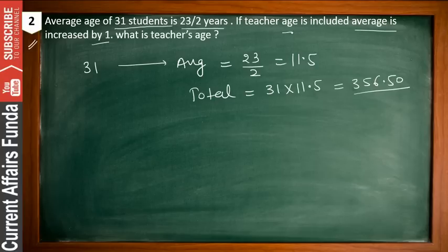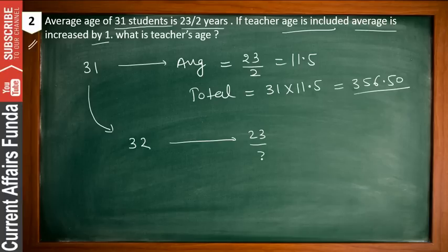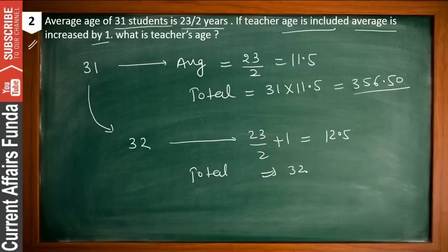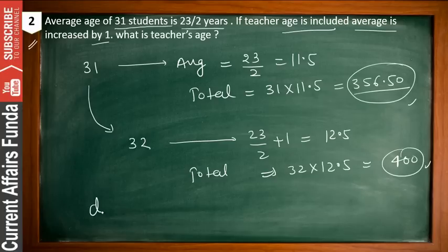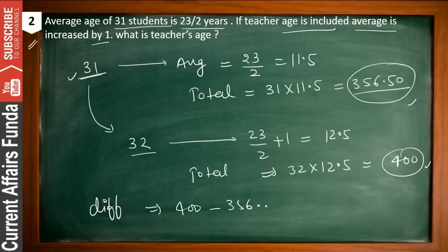The new total is 32 into 12.5, which equals 400. Now take the difference: 400 minus 356.50 equals 43.5. That is the age of the teacher. So with 31 students having a total of 356.50, and including the teacher giving a new total of 400, the difference of 43.5 is the teacher's age.